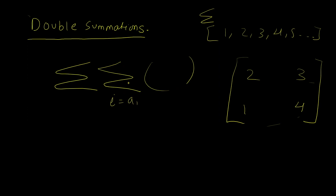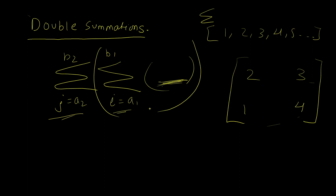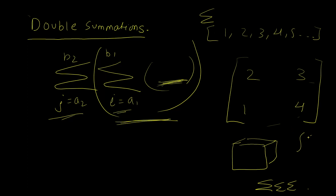With two summation signs and an expression involving two variables, say i ranging from a₁ to b₁ and j from a₂ to b₂, I resolve the inner summation first, then the outer — just like composition of functions. The flexibility in expression, order, and range allows describing sums over all kinds of matrix structures, even three-dimensional ones using triple summations — analogous to double and triple integrals in physics.